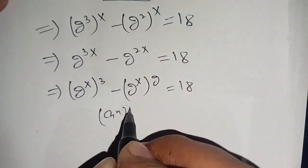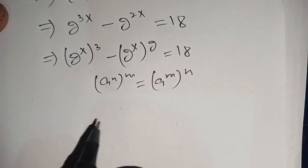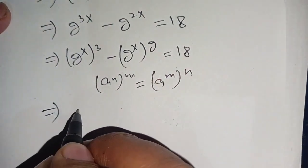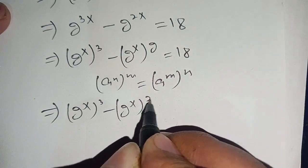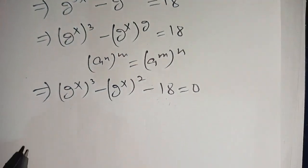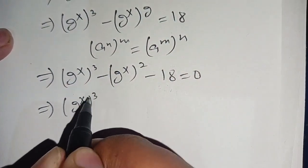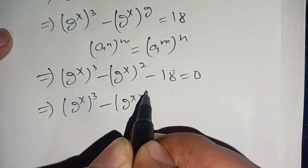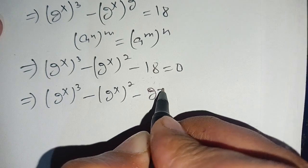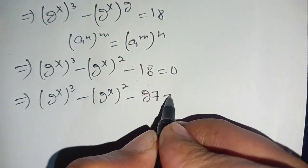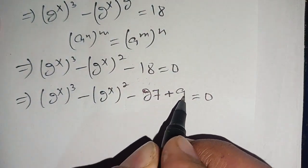We know that a to the power n, bracket to the power m, is equal to a to the power n times m. In the next step we write (2^x)^3 minus (2^x)^2 minus 18 is equal to 0. Now 18 can be written as 27 minus 9, so we have (2^x)^3 minus (2^x)^2 minus 27 plus 9 is equal to 0.